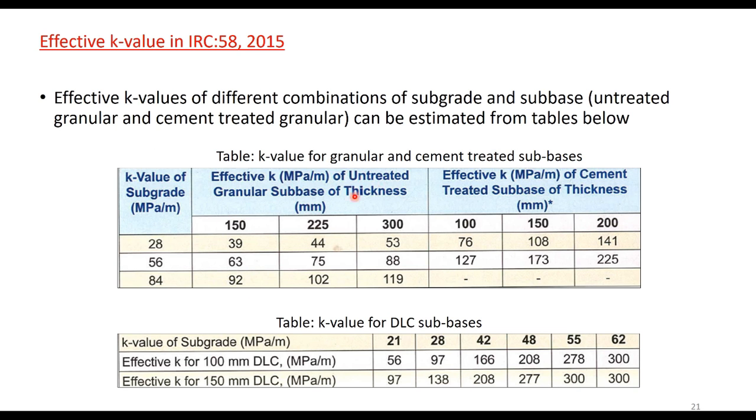This is the table for effective k value of cement treated subbase of different thicknesses. If you are providing DLC subbase, then the table shows DLC of 100 millimeter thickness or 150 millimeter thickness will give you a different value of effective subgrade reaction.